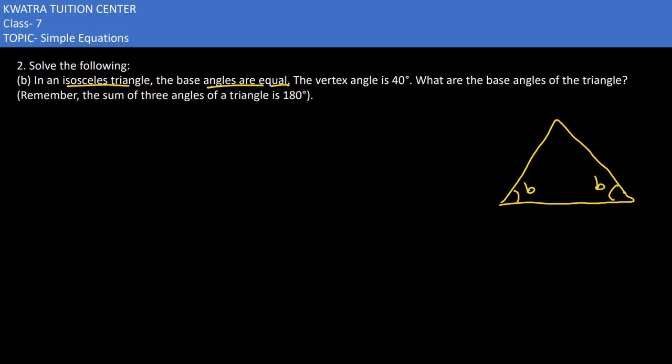Let's say the two base angle measures are b and b. We've been asked to find them. The vertex angle has been given as 40 degrees. Now we need to find the base angles.